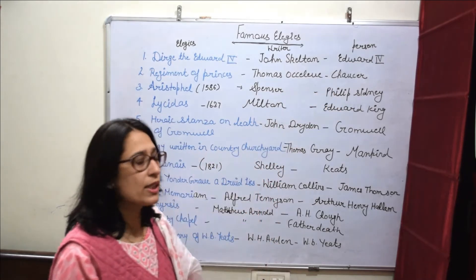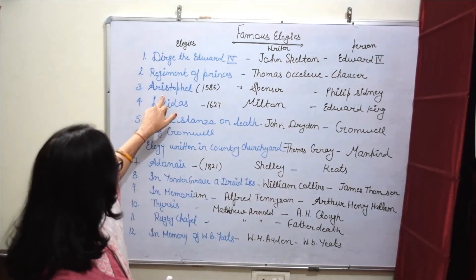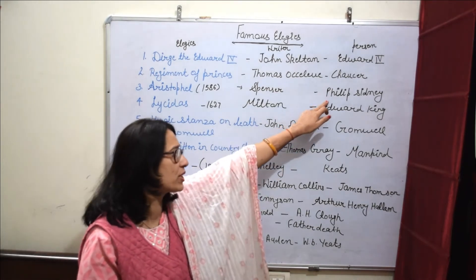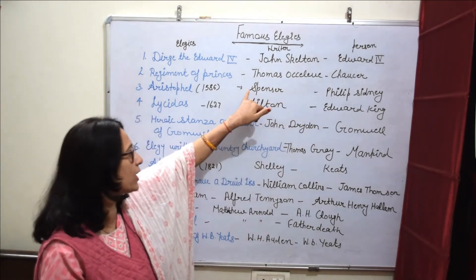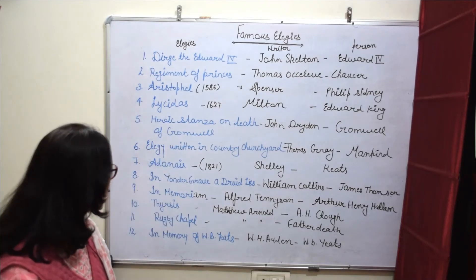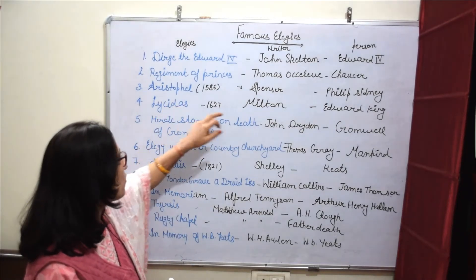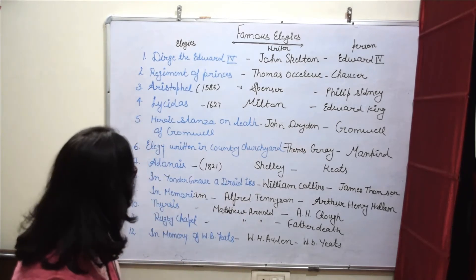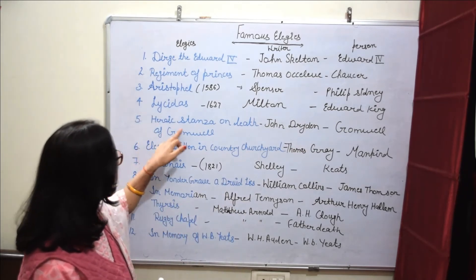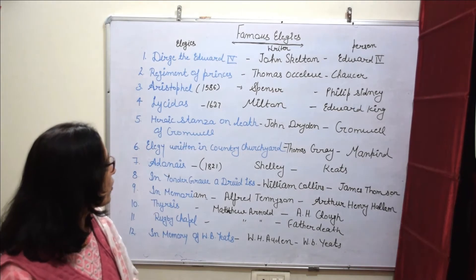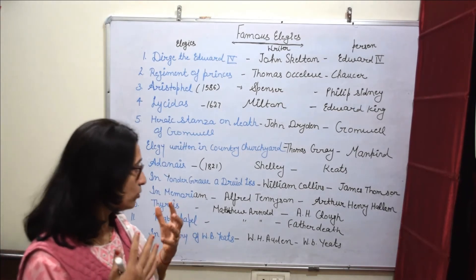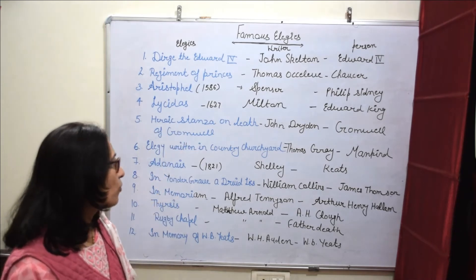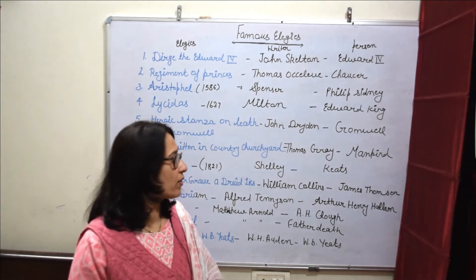Cromwell की death के ऊपर लिखी गई elegy का नाम है Heroic Stanzas on the Death of Cromwell, जो John Dryden के द्वारा लिखी गई है।